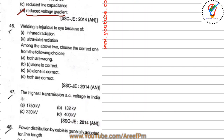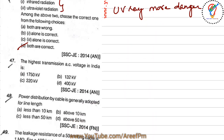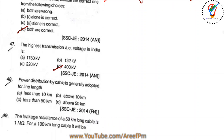Question 46: welding is injurious to the eye because of both infrared radiation and ultraviolet radiation, but UV rays are more dangerous. So 'both' is the correct answer. Question 47: the highest AC transmission voltage in India is 400 kV.